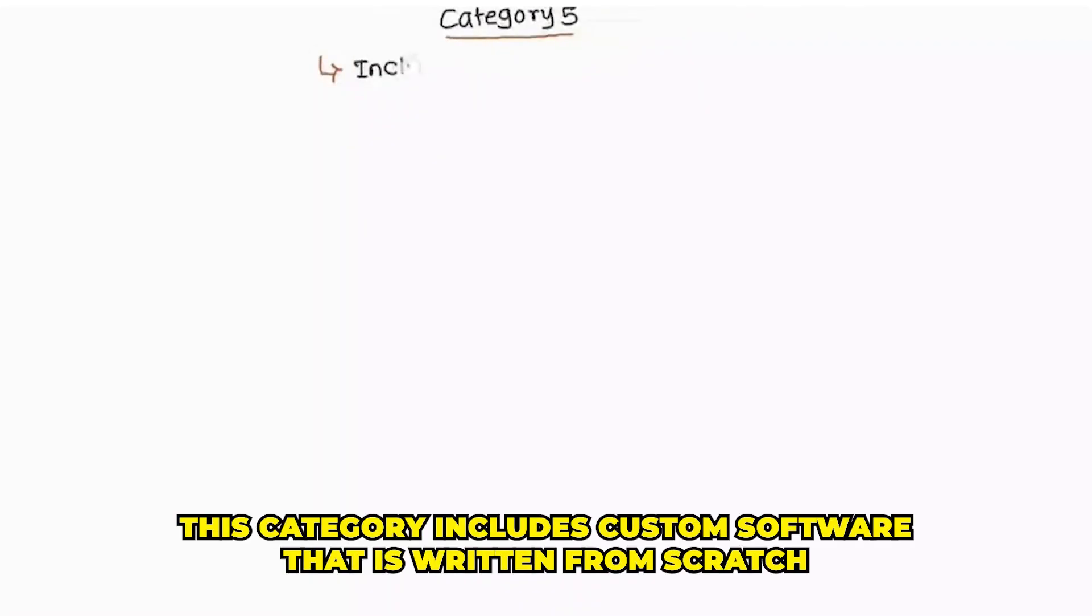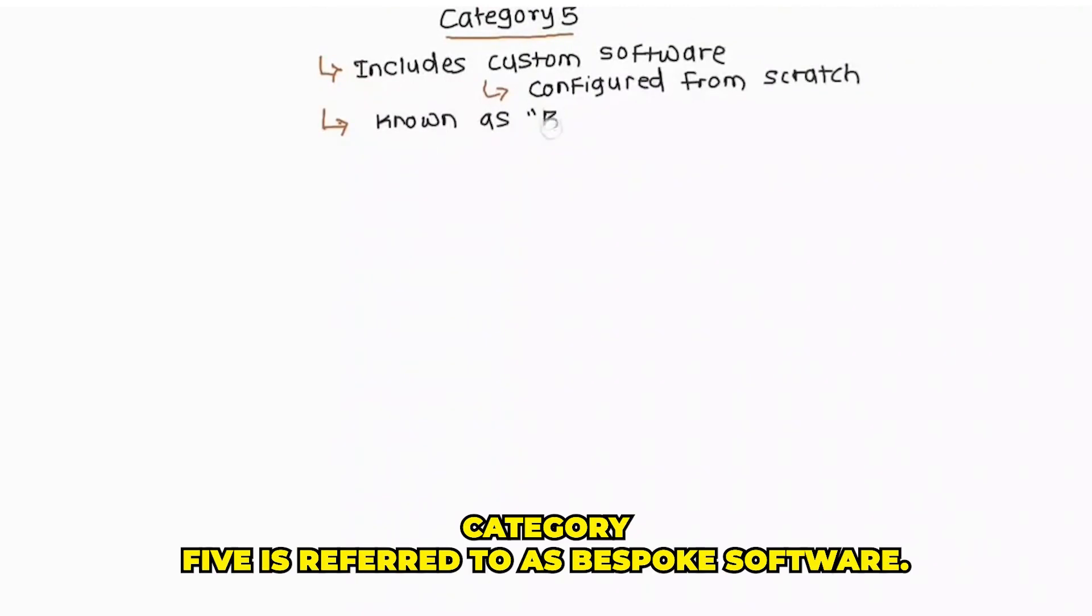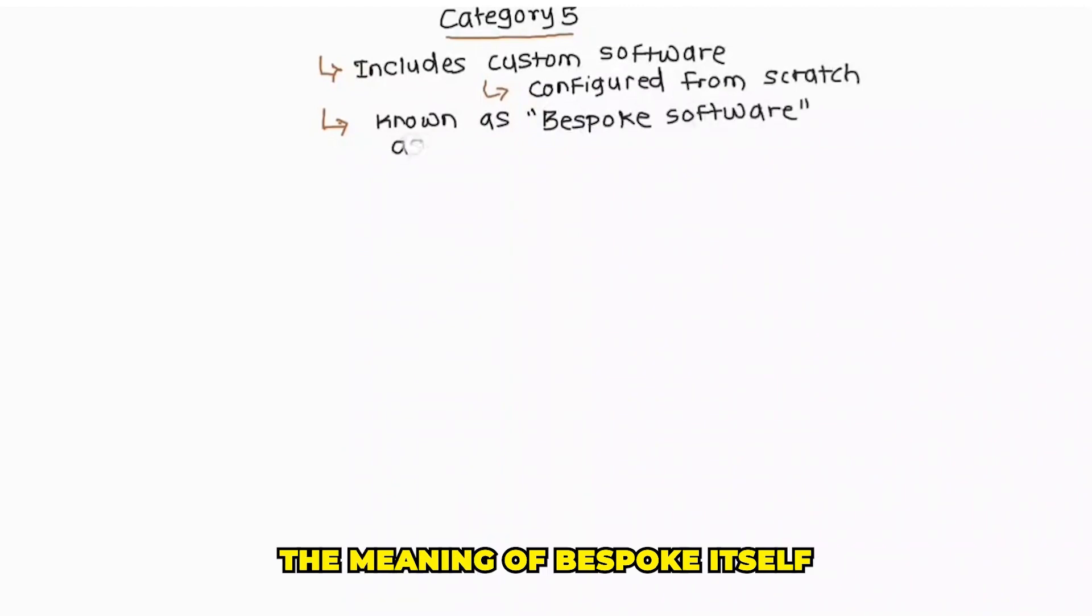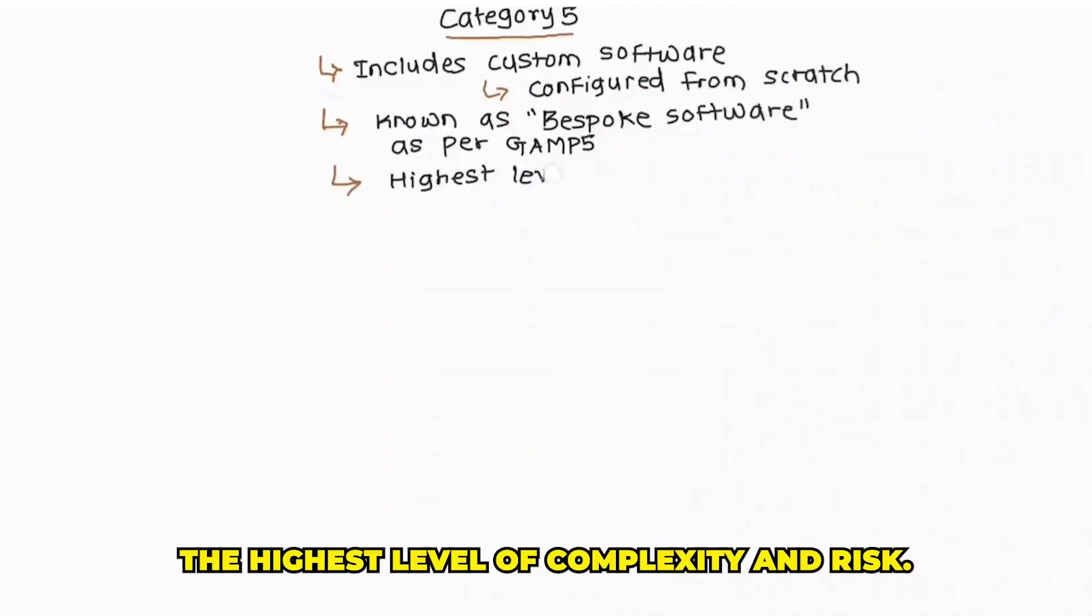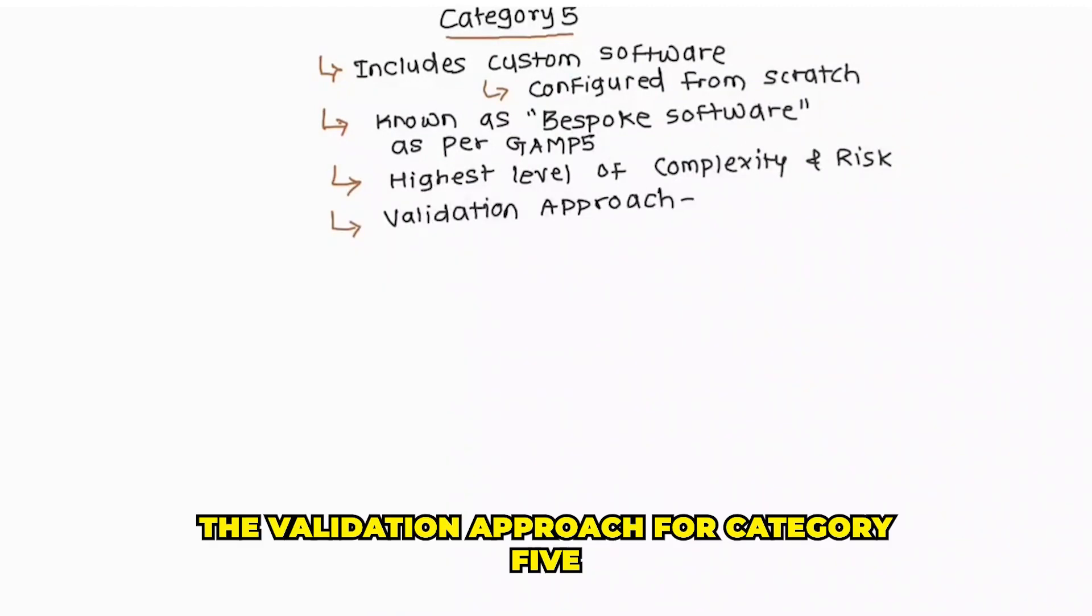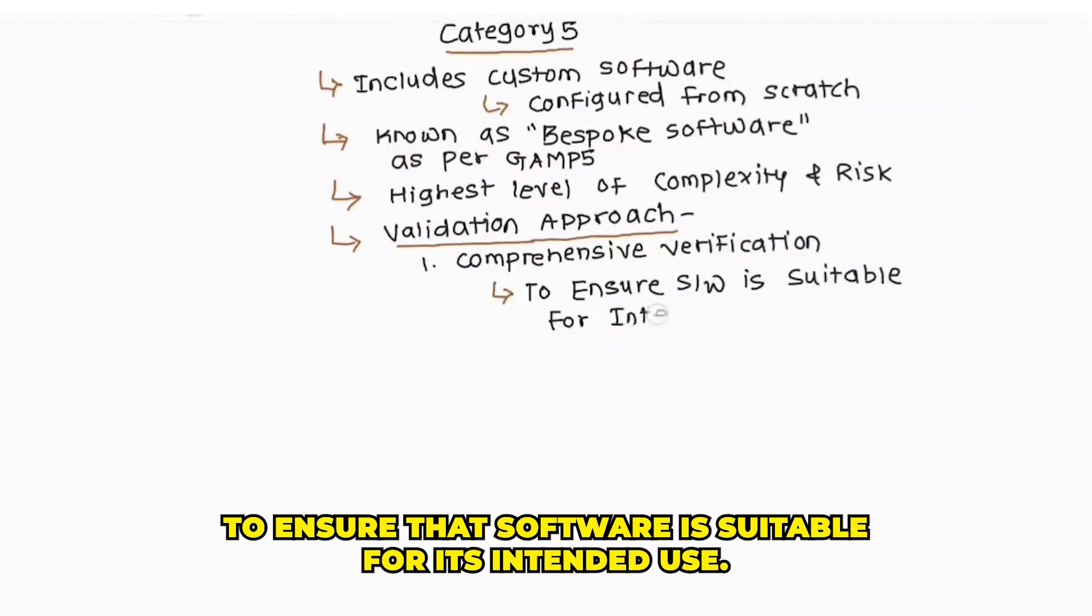Category 5. This category includes custom software that is written from scratch to fulfill specific business needs. In GAMP 5, category 5 is referred to as bespoke software. The meaning of bespoke itself is made for a particular user or customer. Due to its customized nature, bespoke software falls into category 5, which signifies the highest level of complexity and risk. The validation approach for category 5 software involves comprehensive verification activities and documentation to ensure that software is suitable for its intended use.